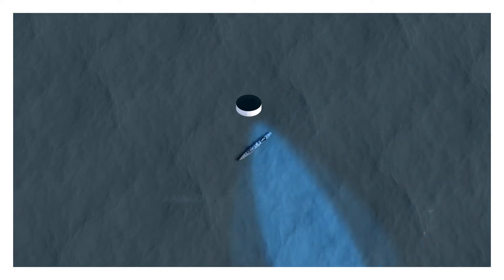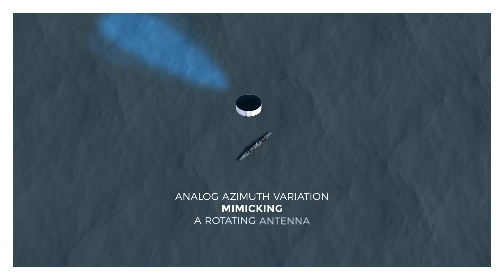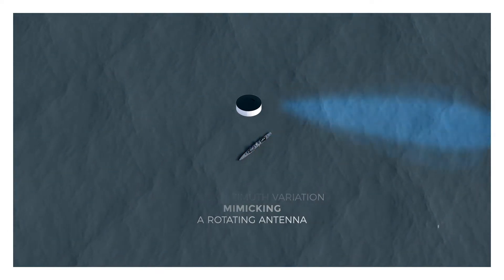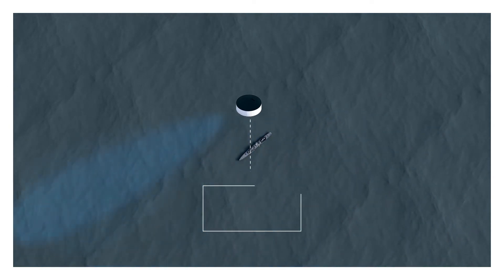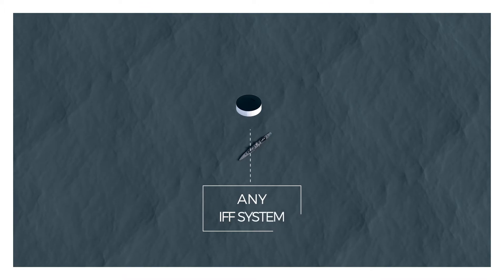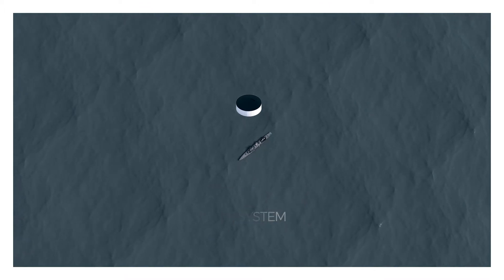The generated beam has an analogue azimuth variation, mimicking a rotating antenna. This offers the possibility of communicating with any IFF system without the need for adjustments to the interrogator.